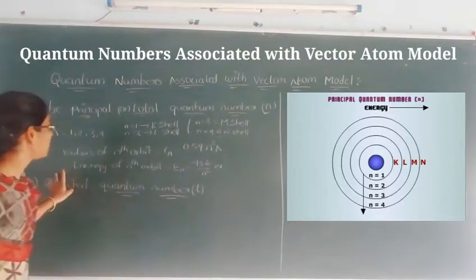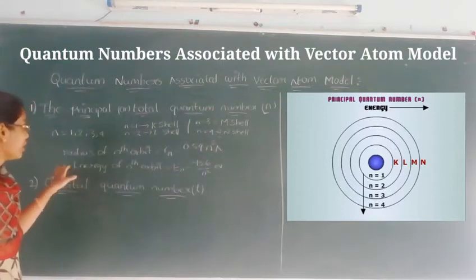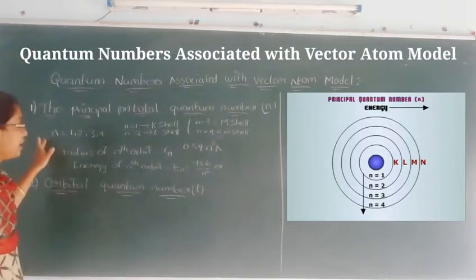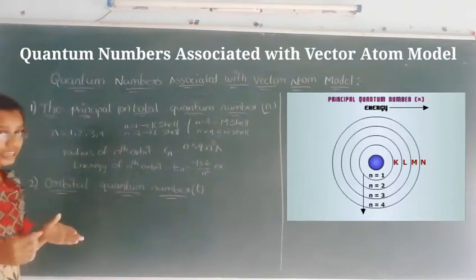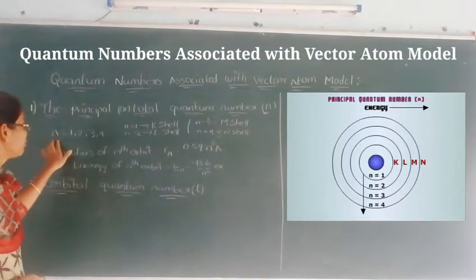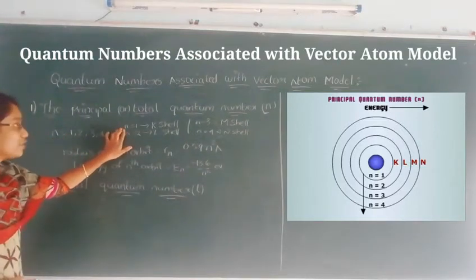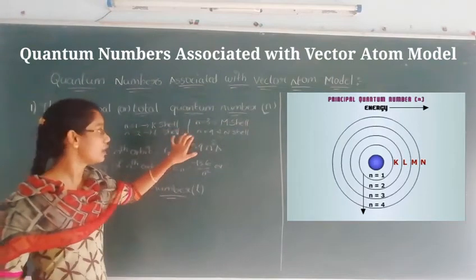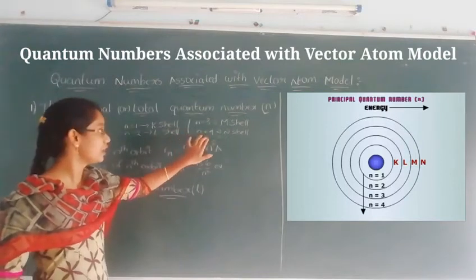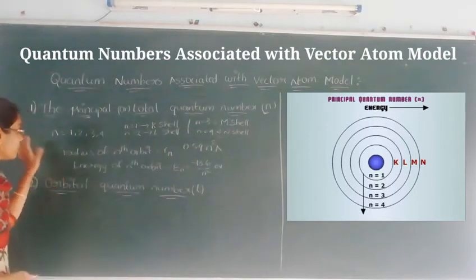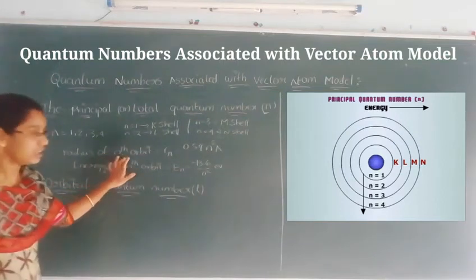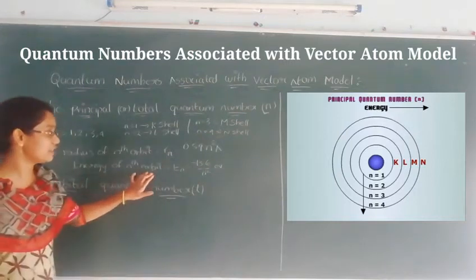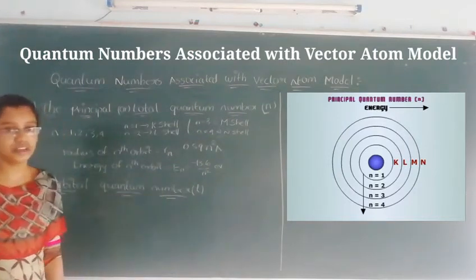To summarize the principal quantum number: it is denoted with n, and n values are 1, 2, 3, and so on. n = 1 is the K shell, n = 2 is the L shell, n = 3 is the M shell, and n = 4 is the N shell. The radius of the nth orbit is Rn = 0.529 n² Å, and the energy of the nth orbit is En = −13.6 / n² electron volts.